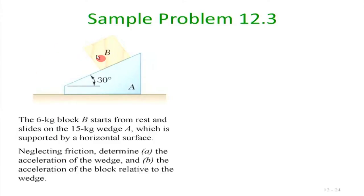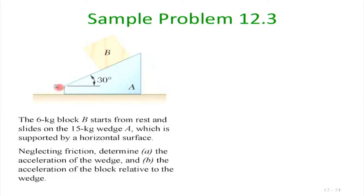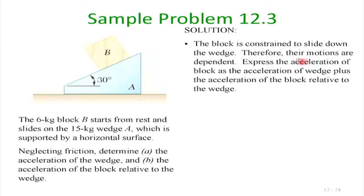This is a 2-degree-of-freedom problem. Block B can have acceleration along the slope (relative to A) and overall translation, whereas wedge A can only translate horizontally. Because block B is constrained to slide down the wedge, their motions are completely dependent. When A accelerates, it takes B along, but B can also slide down the slope independently.